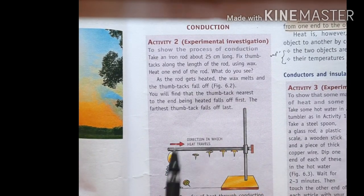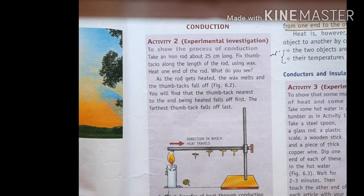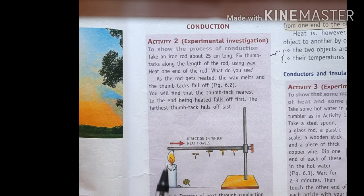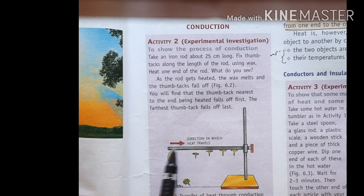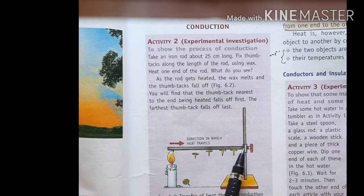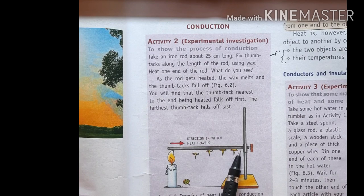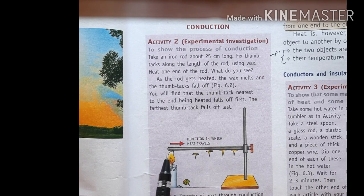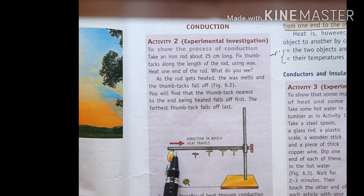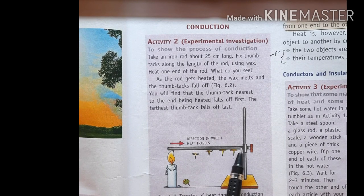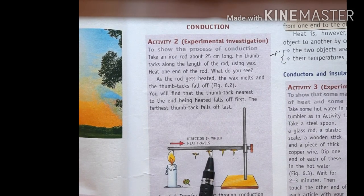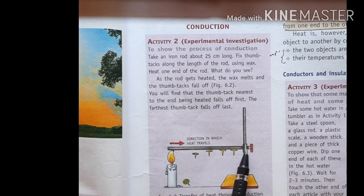From this activity, we can see that the end being heated by the candle has a higher temperature, and since there is no candle at the other end, that end has lower temperature. So heat flows from the high-temperature end toward the low-temperature end. This method by which heat is conducted from one end to the other is called conduction of heat.